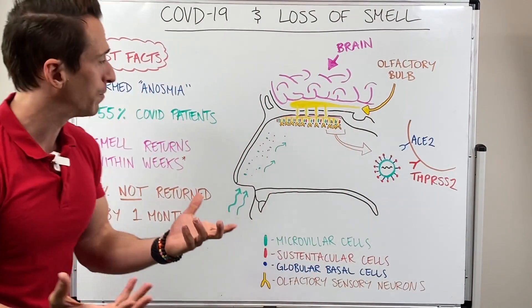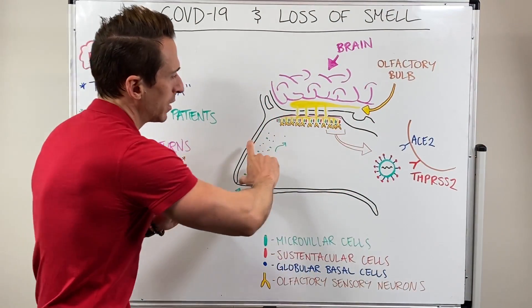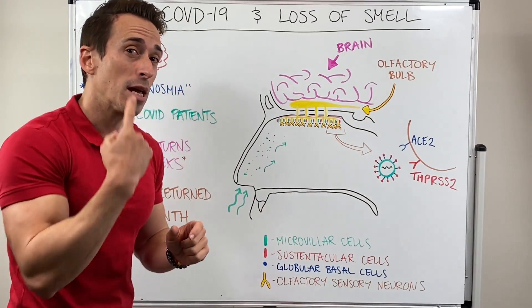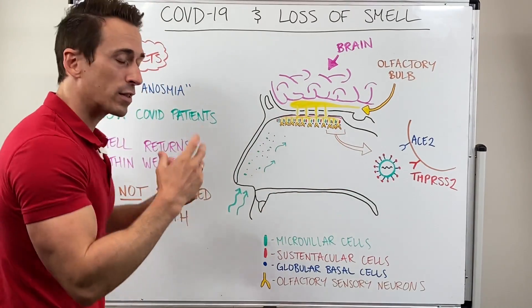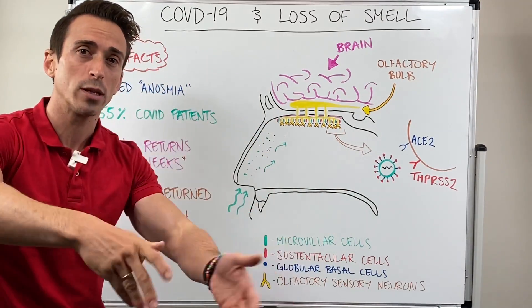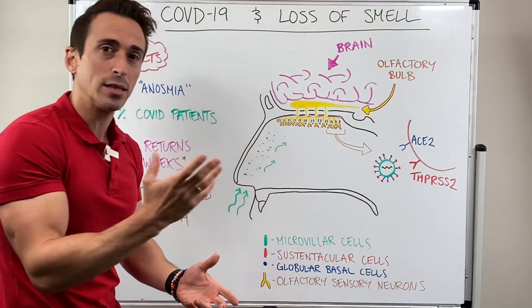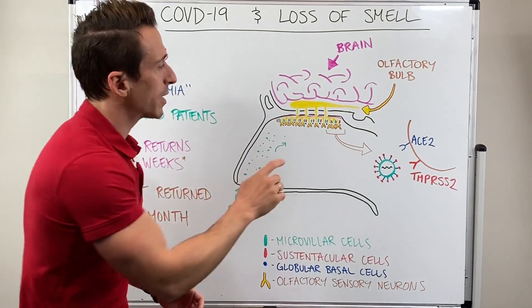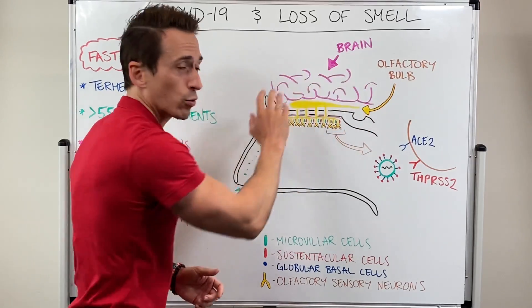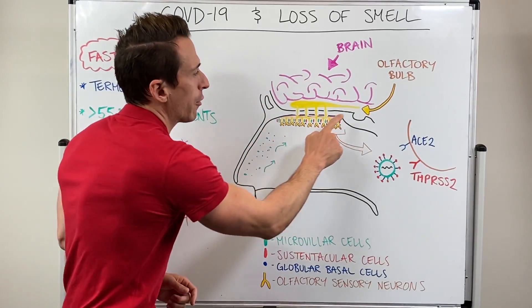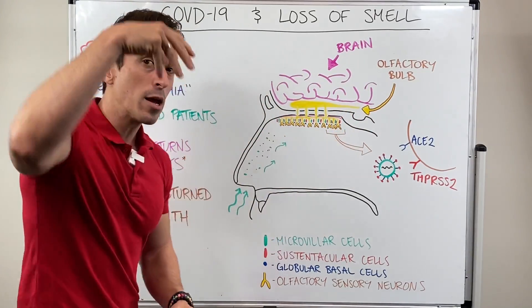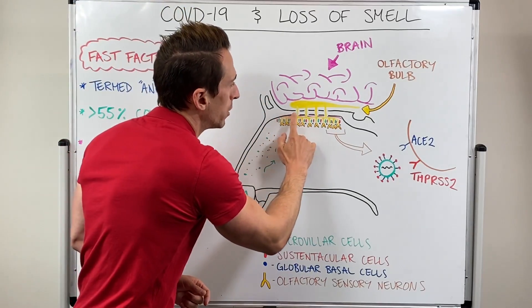How does this happen and why does this happen? I've drawn up here the nasal cavity, deep within the nose. What you'll find is obviously we inspire air, and as we inspire air, we bring in chemicals and odorants. Sensory neurons project from our central nervous system, specifically an area called the olfactory bulb, and they project neurons through a bony plate in the nose.